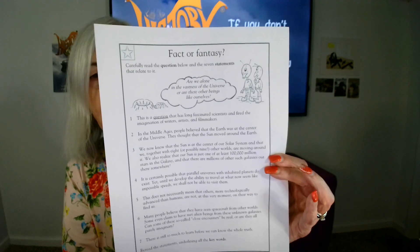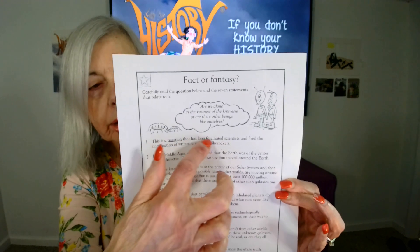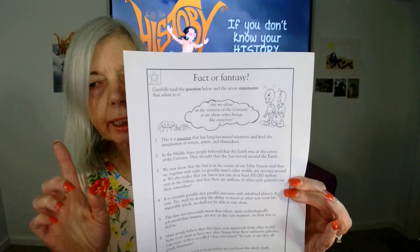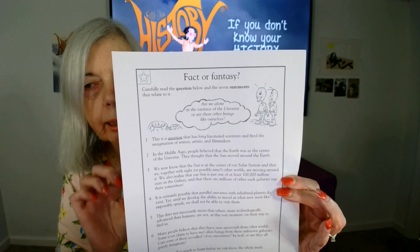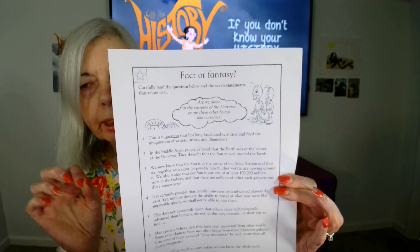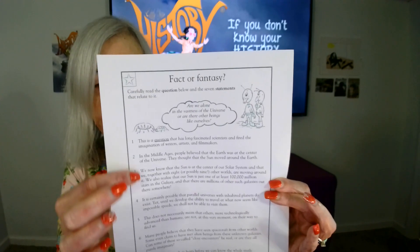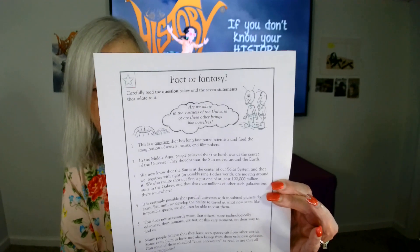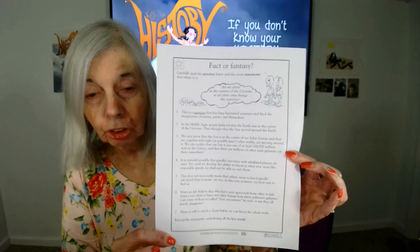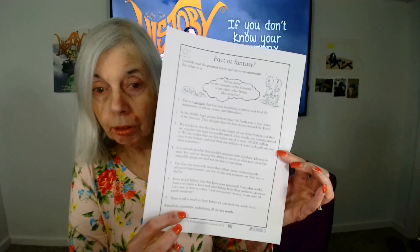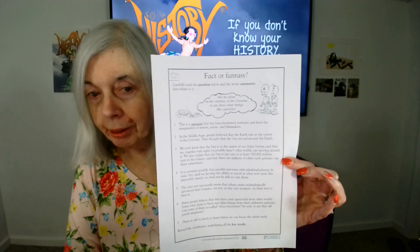Then go back in each sentence and ask the student to underline the keywords that gave the clue as to whether it was a true fact or something that could be made up or unreal. After the student does all of that, for fun, you might ask the student if he or she would like to draw a picture on the back of what this alien might look like.